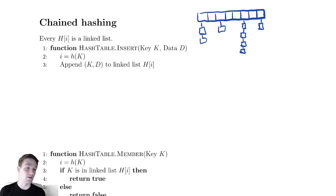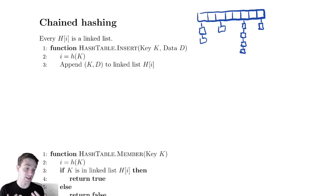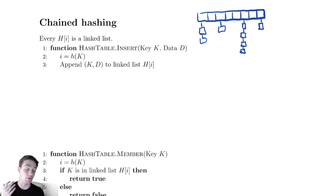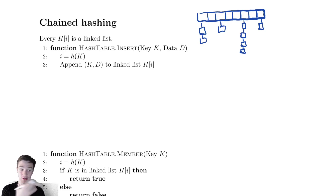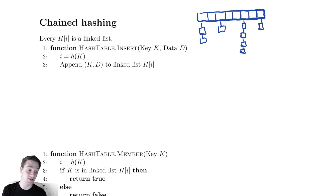We have some hash table and we are storing the key-value pairs in the various locations. If we have a collision in the hash table, the way we resolve that collision is by appending it to the linked list at that location. The implementations here are a bit pseudocode-y, but that's fine as long as when we analyze it we remember that we might be sweeping some details under the rug.